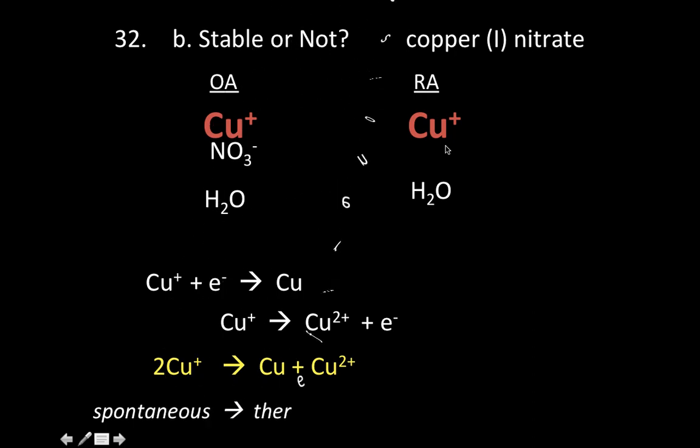So this, in fact, is spontaneous, and therefore it's not stable. So if you have a solution of this sitting around, it's going to break down into Cu metal and Cu 2 plus ions. So that's 32. A lot going on. Hopefully that made sense.